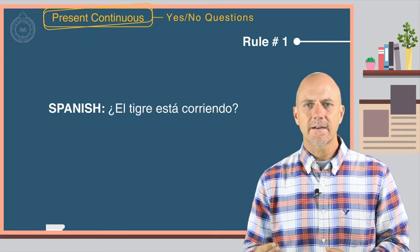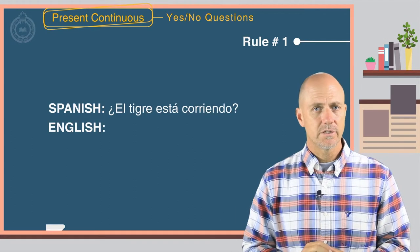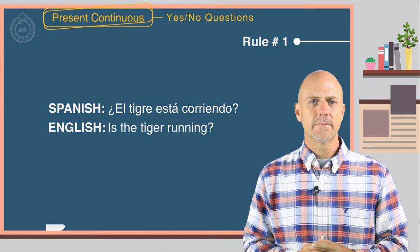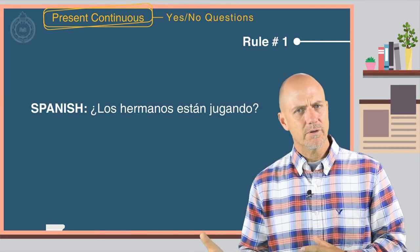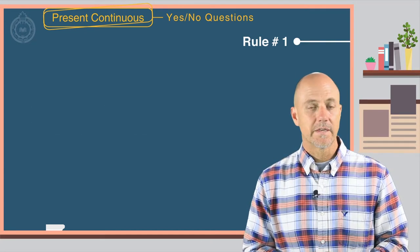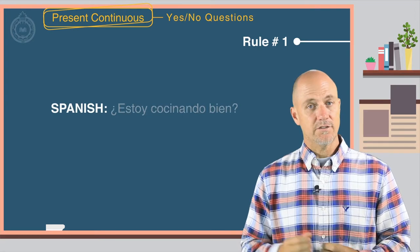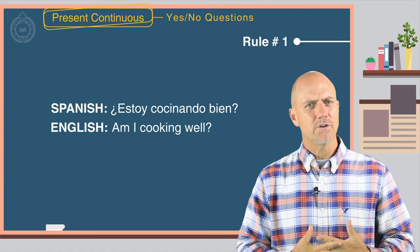Spanish: el tigre está corriendo. English: is the tiger running. Spanish: los hermanos están jugando. English: are the brothers playing. Spanish: estoy cocinando bien. English: am I cooking well.